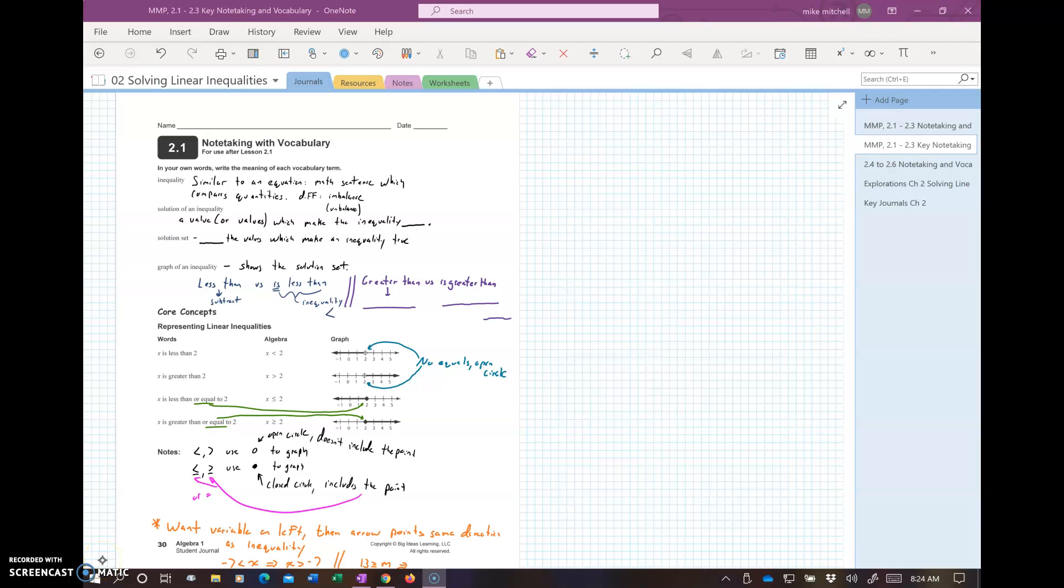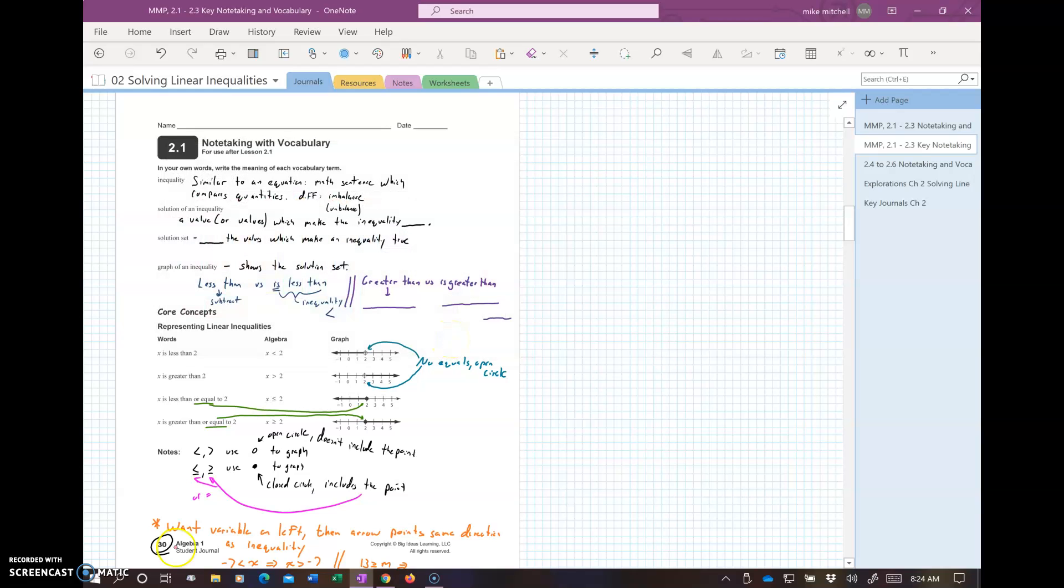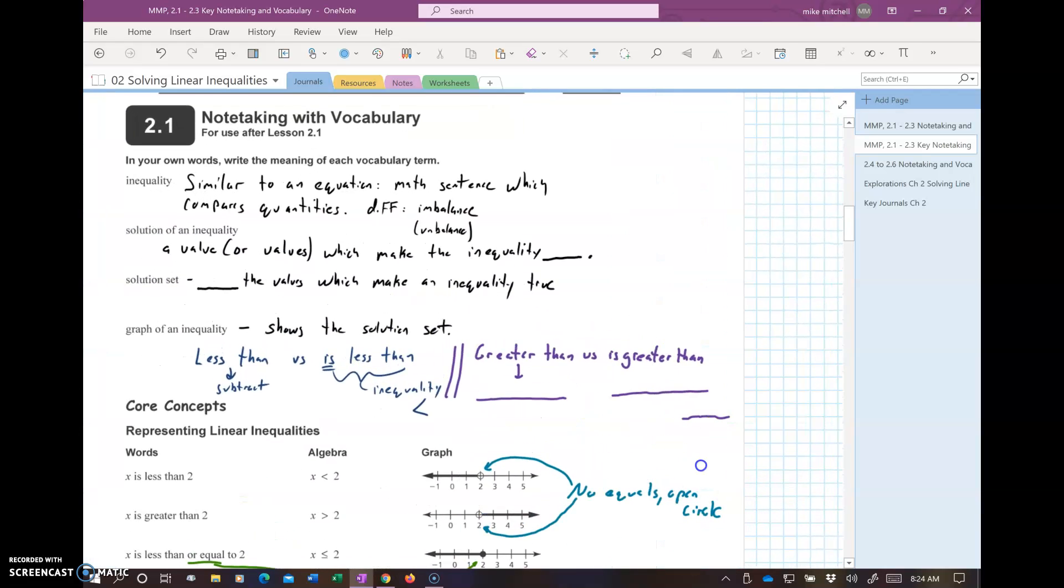Welcome to your journal 2.1 note-taking and vocabulary. It starts on page 30 in your notebook, in your journal I should say. That was page 30 down here I mentioned. That goes to 32. We're going to run through it right now.